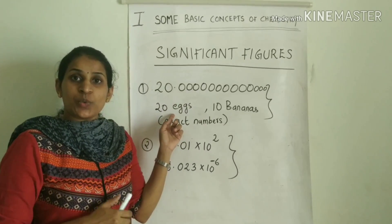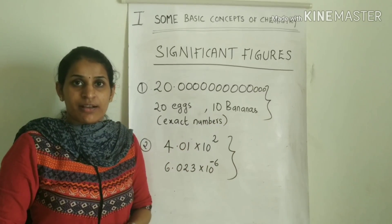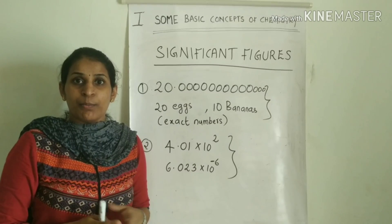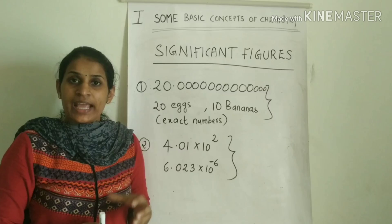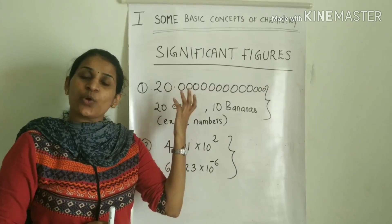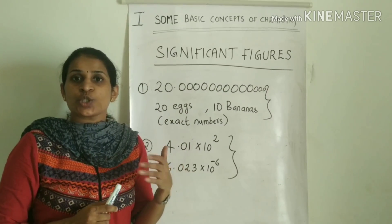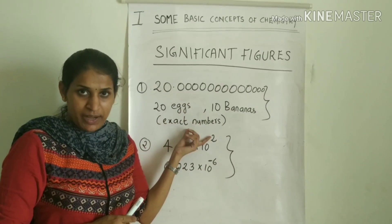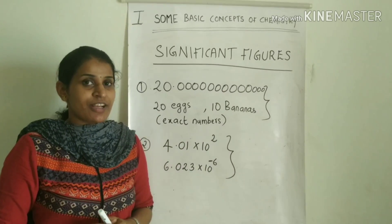For example, if we count 20 eggs, 10 bananas, 5 pins, 100 balls — these are exact numbers. Exact numbers have infinite significant figures. So if you count 20 eggs, it is 20.0000 — infinitely many zeros. For exact numbers, the number of significant figures is infinite.